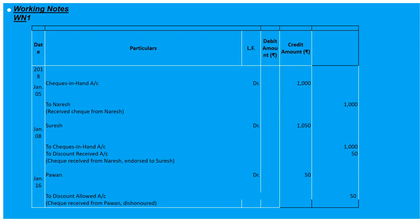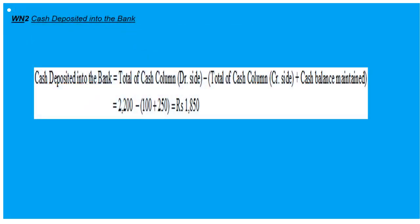On January 16th, since the cheque is dishonoured by bank, as we had already allowed discount we record this discount entry in journal proper: 'Pavance's Account debited 50, To Discount Allowed 50.' The cash deposited into bank is calculated as: total debit cash column minus total credit cash column plus cash balance maintained = 2,200 minus 100 plus 250 = 1,850. So the contra entry on 20th January is 1,850.